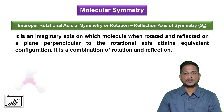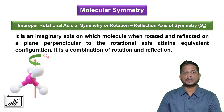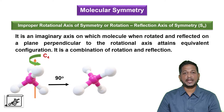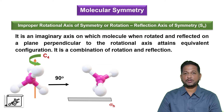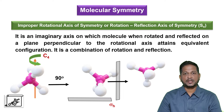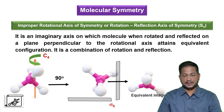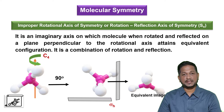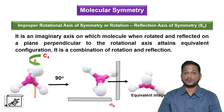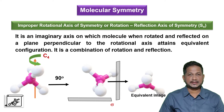Therefore it is also called as rotation reflection axis. This is the methane molecule which we rotate through C4 axis of symmetry, that is through 90 degrees, followed by reflection in a plane perpendicular to the rotational axis of symmetry to get an equivalent image. These two images are equivalent to each other — not identical. This axis is called as rotation reflection axis or S4 axis of symmetry.